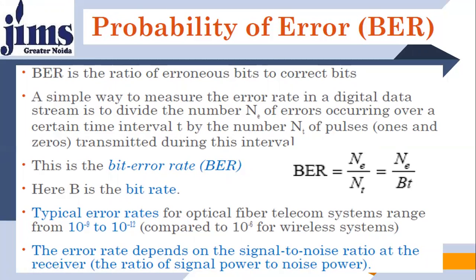Typical error rates found in optical fiber telecommunication systems range from 10 to the power minus 9 to 10 to the power minus 12, compared to 10 to the power minus 9 for wireless systems. A bit error rate of 10 to the power minus 12 means 1 bit in error out of 10 to the power 12 bits received. Bit error rate depends upon the signal-to-noise ratio of a receiver, and signal-to-noise ratio is signal power upon noise power.